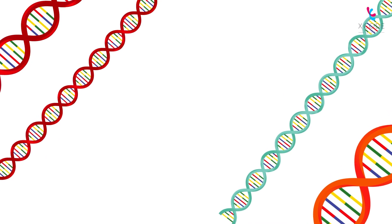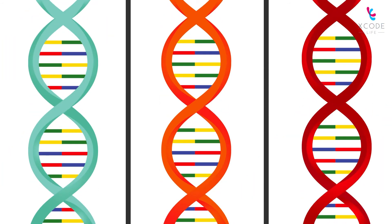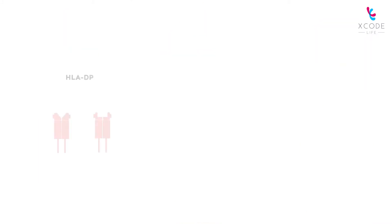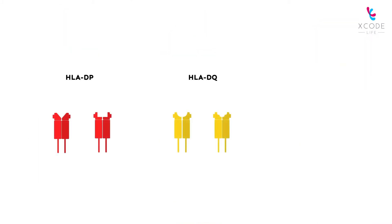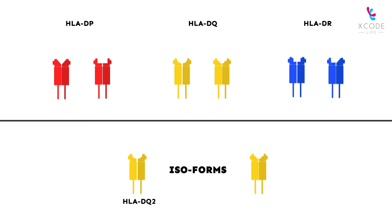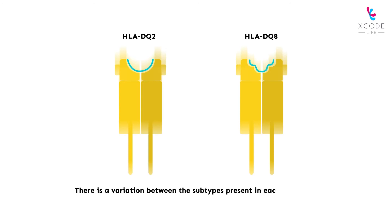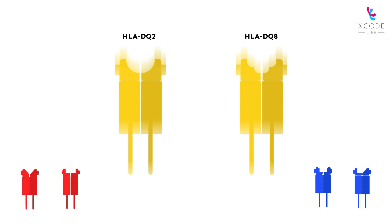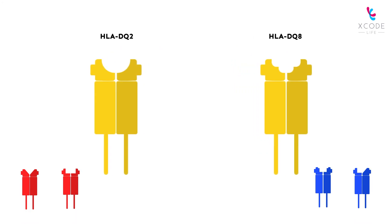This can be explained by certain genetic differences. There are three types of HLA genes involved in immune reaction: HLA-DP, HLA-DQ, and HLA-DR. These three types further have several subtypes, also called isoforms, like HLA-DQ2, HLA-DQ8, and so on. There is a variation between the subtypes present in each individual.